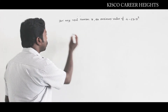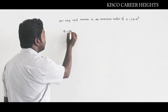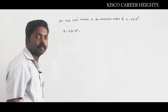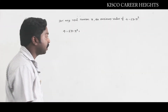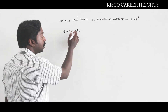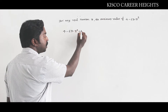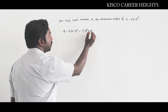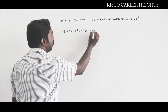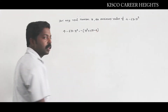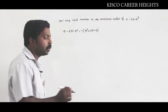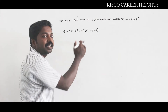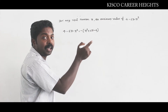Consider the expression 4 - 6x - x². First, make the coefficient of x² equal to 1 by taking minus outside; it turns to -(x² + 6x - 4). Now, for the coefficient of x, which is 6, take its half: 3, then square it: 9.